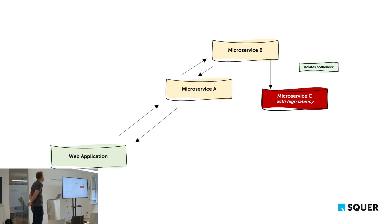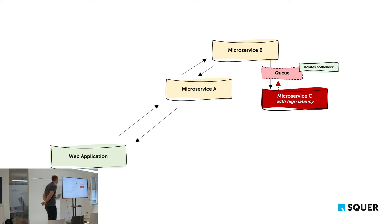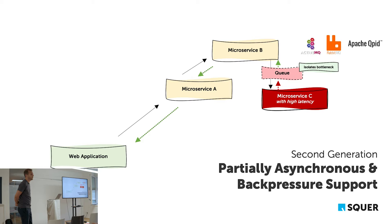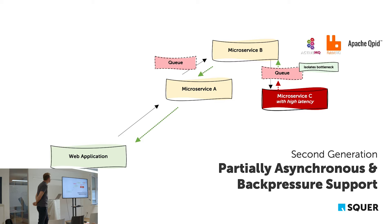This was the first generation of microservices: synchronous integration without backpressure support. Then came the high time of queues — we introduced queues using WebMQ, ActiveMQ, or other AMQP implementations to isolate bottlenecks, giving us partial asynchrony and at least some backpressure support.